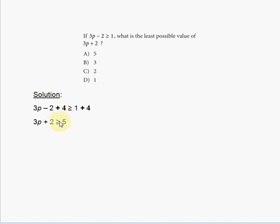Now you know the least possible value of 3p plus 2. Because it's greater than or equal to 5, the value 5 can be the least number that 3p plus 2 equals to. So answer choice A.